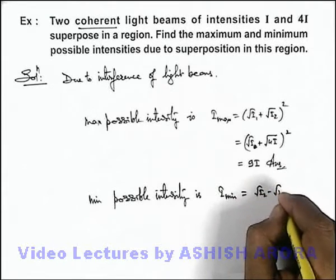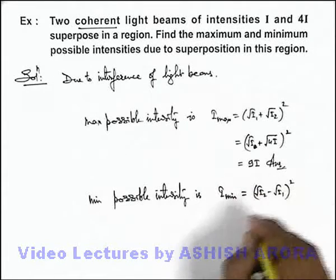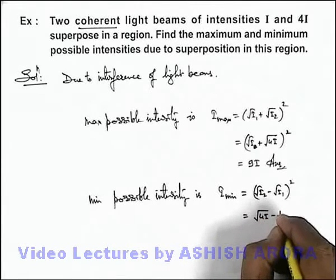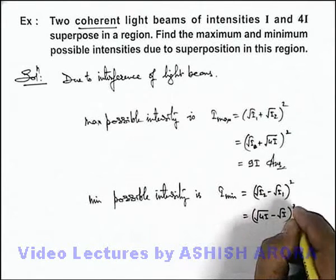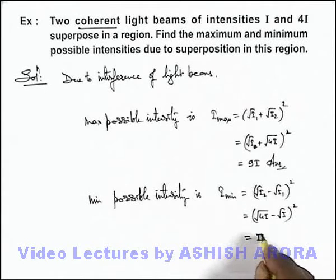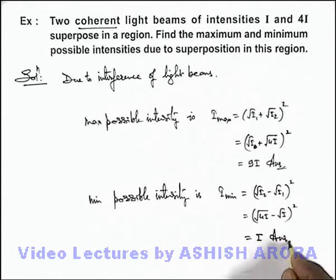(√I₂ - √I₁)². On substituting the values: (√4I - √I)². This will be (2√I - √I) = (√I)², which can be written as I. That will be another answer to this problem.